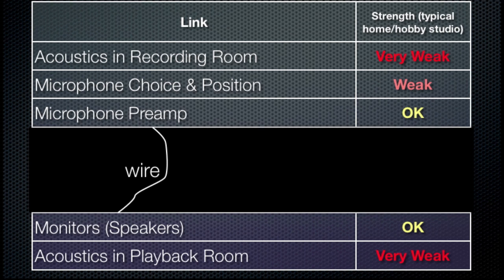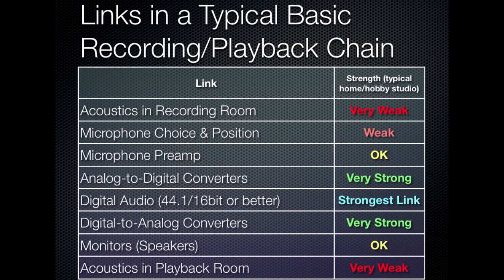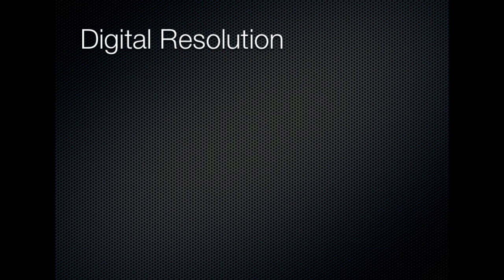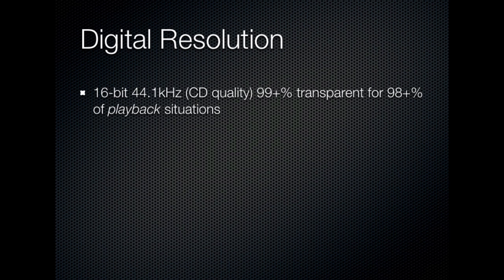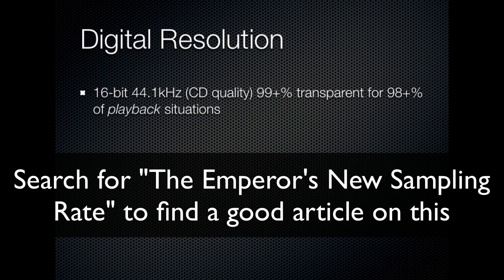That's how transparent digital recording is without processing compared to these other factors. That's why I strongly believe it's premature to worry about digital resolution as a hobbyist recordist until you get all that other stuff straightened out. For playback as a final delivery format, CD quality really is good enough for nearly every situation. I can imagine maybe wearing in-ear monitors in a nearly silent room, listening to classical music with an extremely wide dynamic range — you might begin to hear some of the dither noise that wouldn't be there if it were 24-bit. But for the vast majority of playback situations, CD quality is enough.